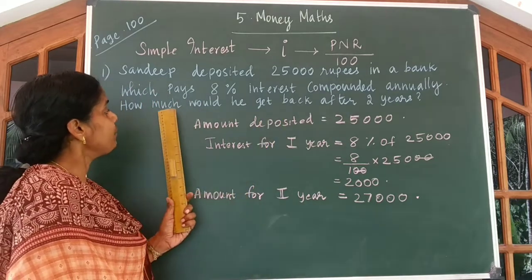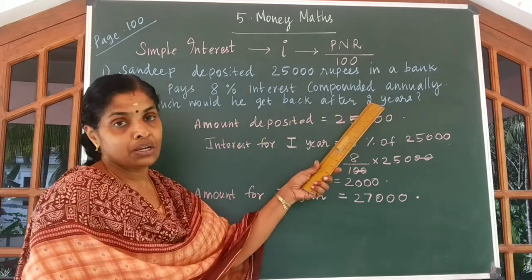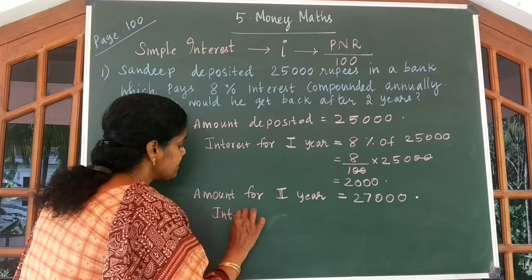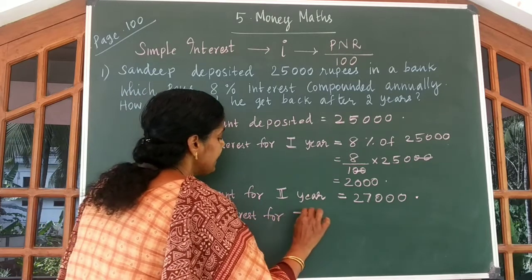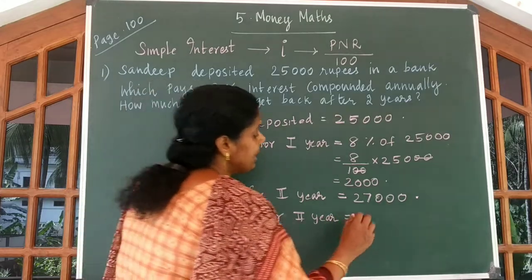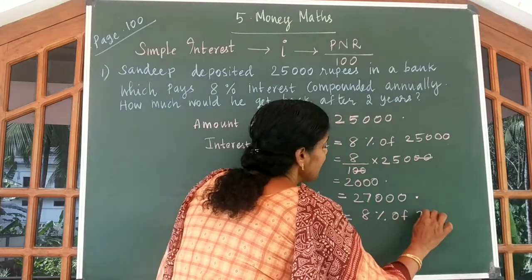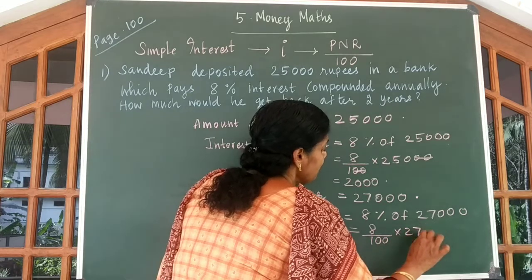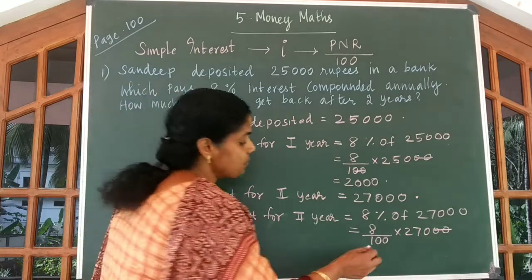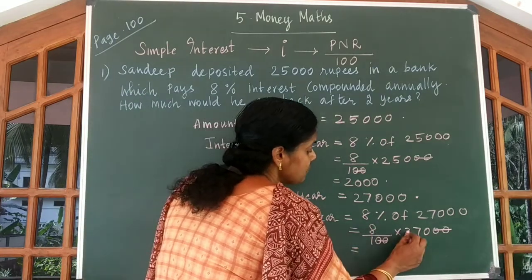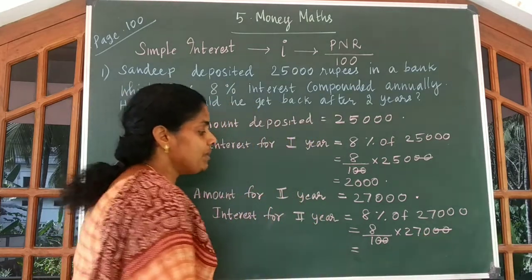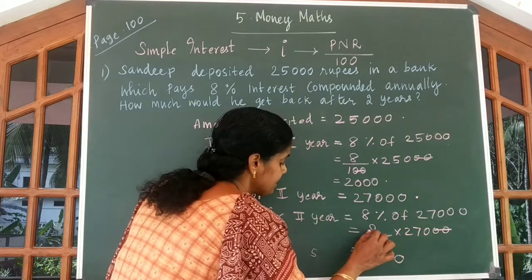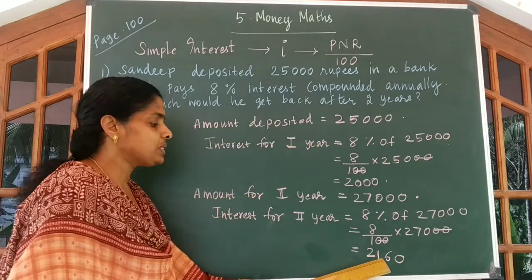Our question is to find out how much he gets after 2 years. For the second year, let us calculate the interest. Interest for the second year is equal to 8% of ₹27,000, that is 8 by 100 into 27,000. Two zeros cancel with these two zeros, so we get 8 into 270, which gives you ₹2,160.